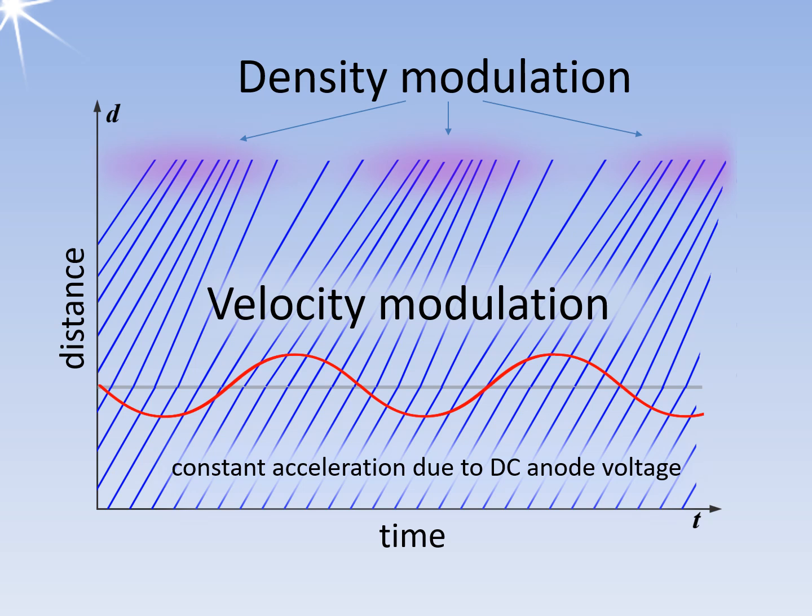As the electrons move, the faster ones catch up with the slower ones, leading to the formation of bunches with a large number of electrons and areas with fewer electrons in between. After a certain amount of time, velocity modulation turns into density modulation. Therefore, the magnetron is classified as a type of velocity-modulated tube.